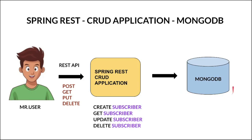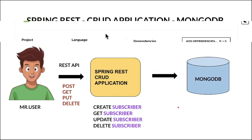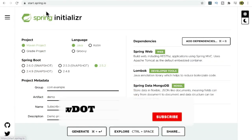It's possible to create a subscriber, retrieve a subscriber, update a subscriber, and delete a subscriber. We're going to use MongoDB as the database behind the scenes. The application exposes a few REST endpoints and we're going to use POST, GET, PUT, and DELETE HTTP methods. Any user can use a REST client like Postman to trigger these endpoints and start creating subscribers in the database.